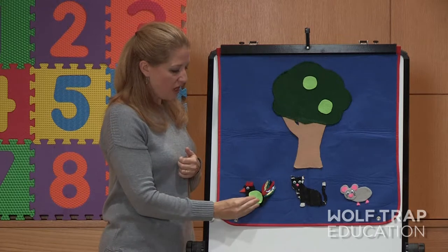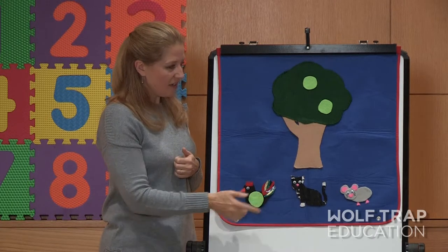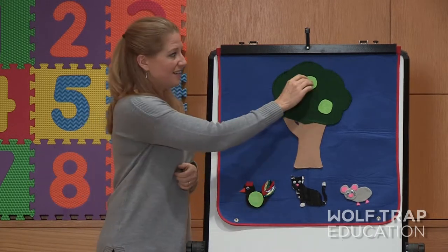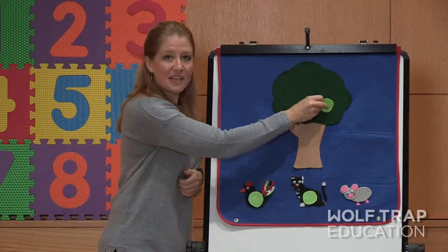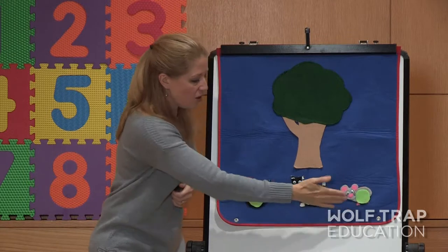And then at the end, the animals can come and they can eat the berries. So the rooster comes and eats a berry. And how many berries do we have left on the tree? And so we can go through and do some basic math as the animals eat their green berries.